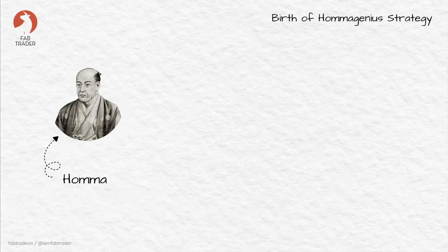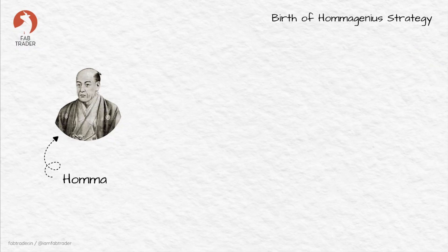Let's start from the very beginning — the origins of this strategy. Meet Homa Munihisa, a legendary Japanese rice trader from the 1700s. Homa is often called the father of candlestick charting. He noticed something fascinating — that markets move not just because of supply and demand but because of human emotion: fear, greed, hope, hesitation. These forces repeat over and over, creating patterns that traders can learn to read. That's how candlestick patterns were born.